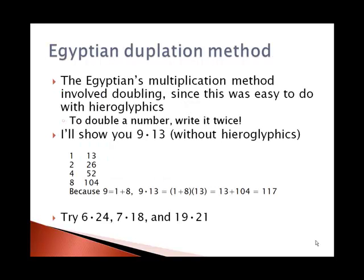The Egyptian duplation method is so named because it involves doubling. Doubling was easy to do with Egyptian numerals — you just wrote the numeral twice. I'll show you 9 times 13, but without hieroglyphics. Here we start with 1 and 13, or rather 1 and one of the factors.